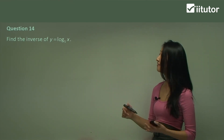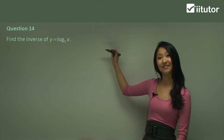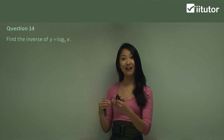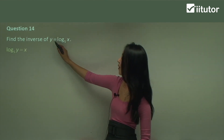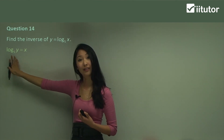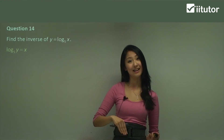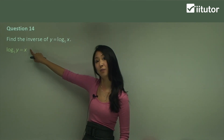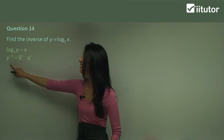In question 14, we want to find the inverse of y equals log base 5 of x. So instead of having an exponential function, we're given a logarithm function and we want to find its inverse. Switching x and y, we have x equals log base 5 of y. Now, how we make y the subject here is we change this back into index form: the base of the log becomes the base of the index, giving us 5 to the power of x equals y⁻¹.